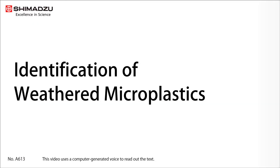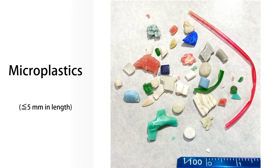Microplastics analysis is not as complicated as you might think. Imagine stumbling upon pieces of plastic debris on your weekend stroll at a beach. Among the plastics, those less than 5mm in length are considered microplastics — smaller than half the size of your thumbnail. Beach scenery may be the least of the problems, as microplastics disrupt marine ecosystems, which in turn have repercussions for a range of other ecosystems.